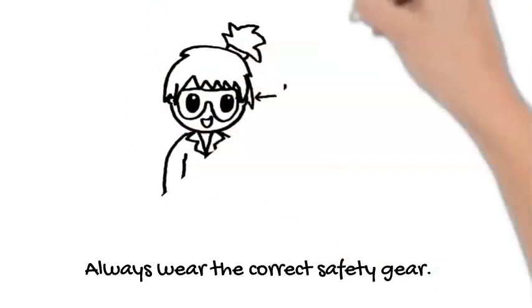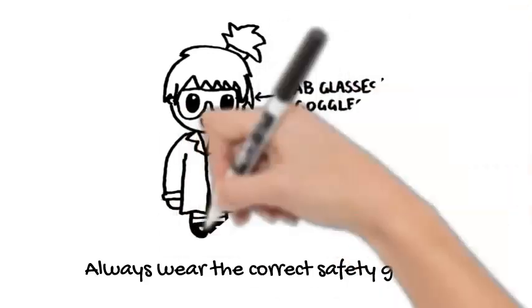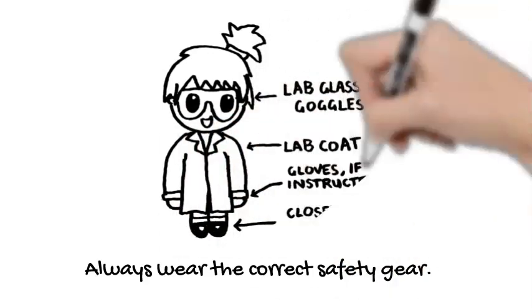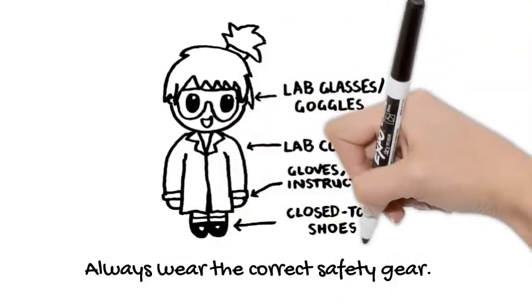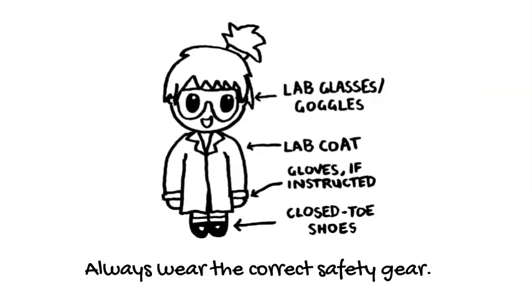This includes your safety glasses or lab goggles, your lab coat, gloves, but only when your teacher tells you to because some glove types are flammable near a Bunsen burner, and of course, closed-toe shoes.